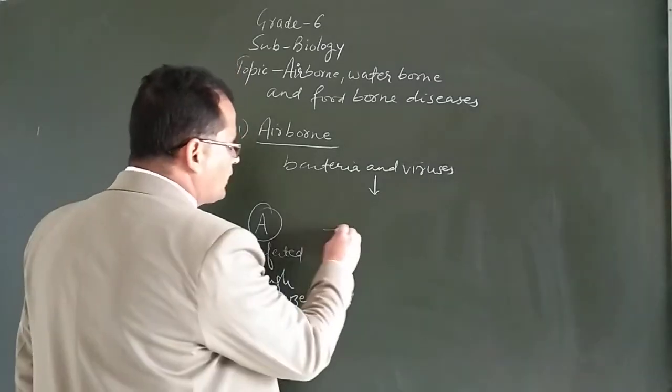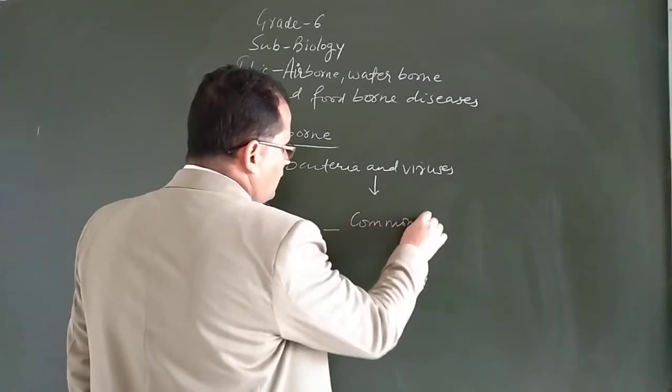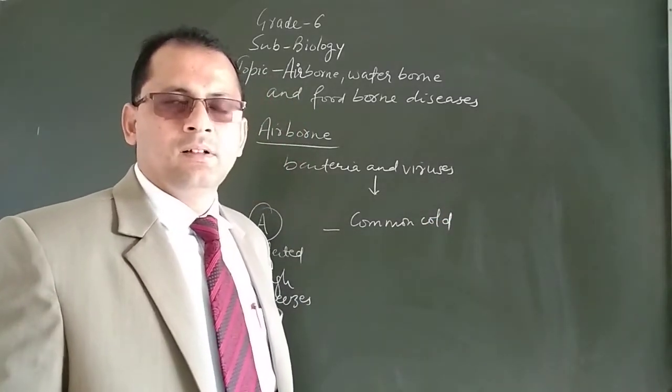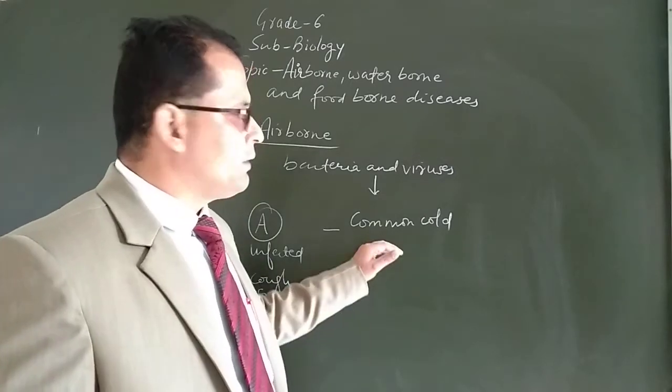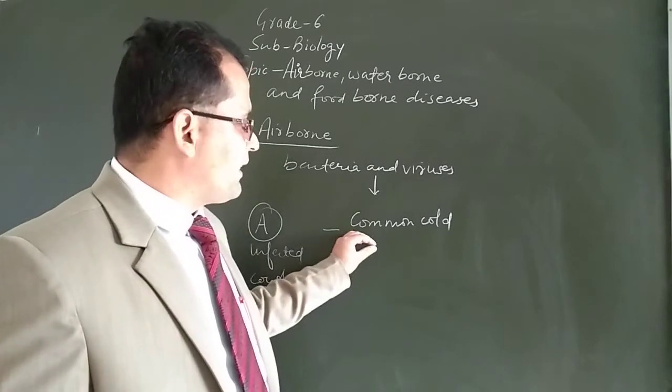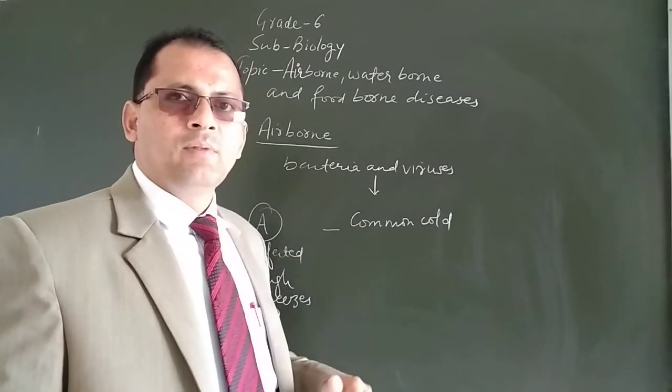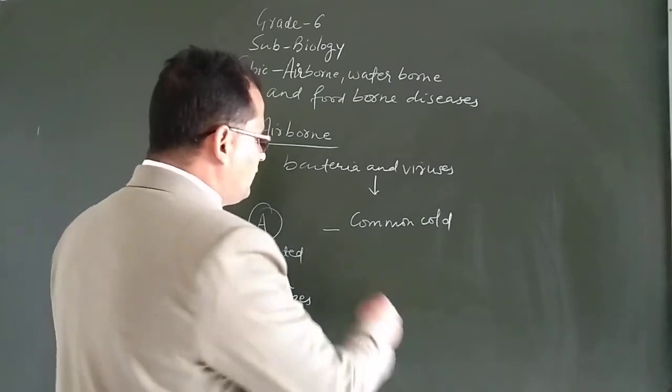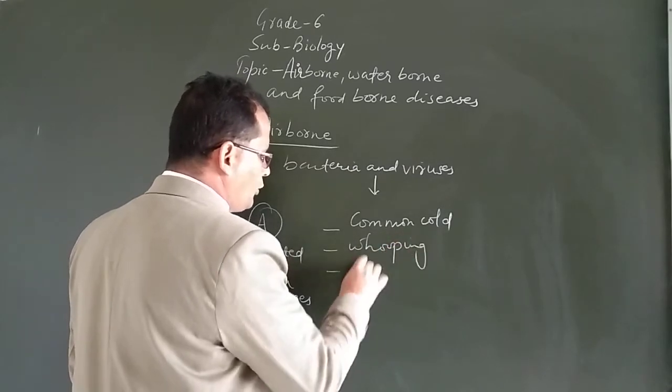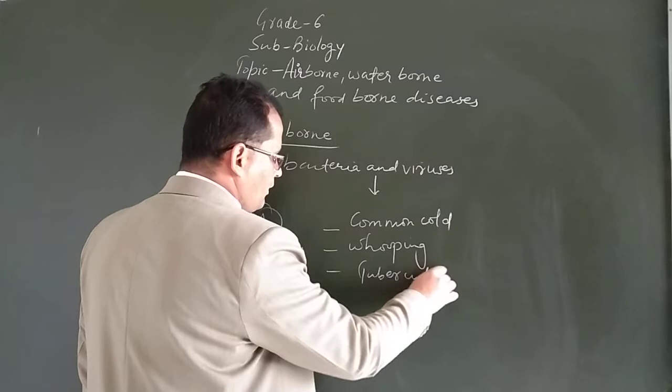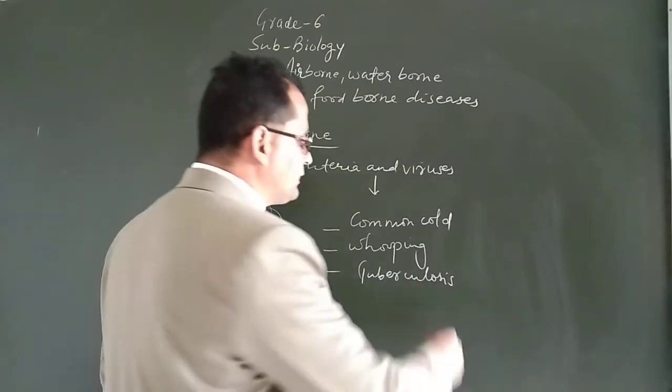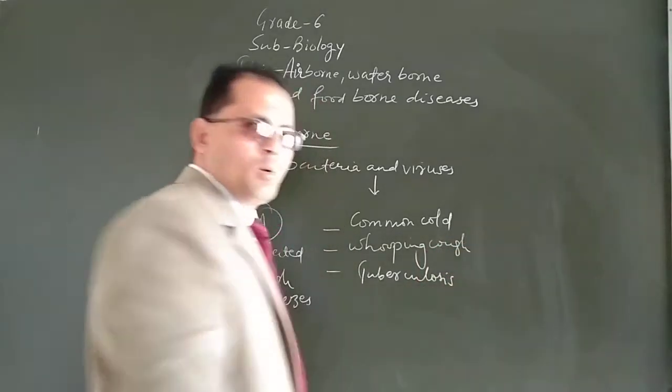For example, common cold is an airborne disease. It spreads very quickly. Common cold is a viral infection, and the virus of this common cold spreads quickly when it is present in the air. Then whooping cough and tuberculosis are examples of airborne diseases.